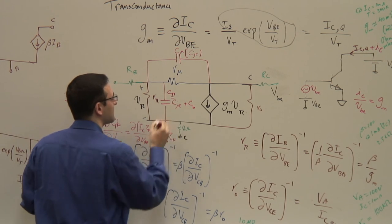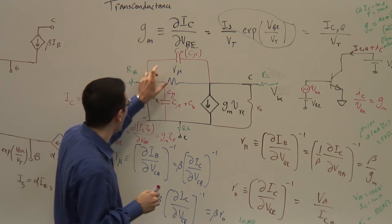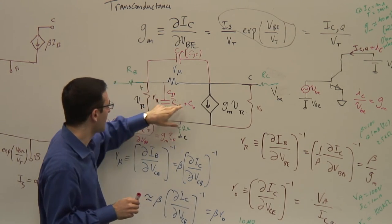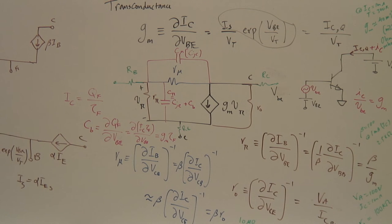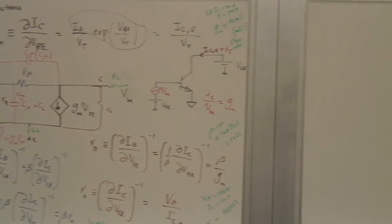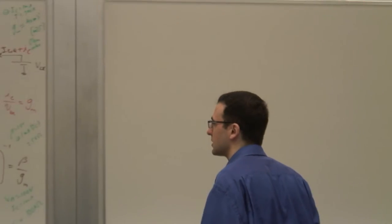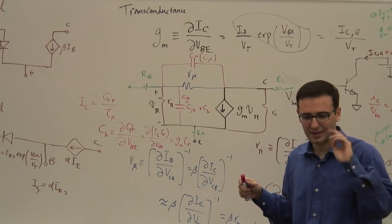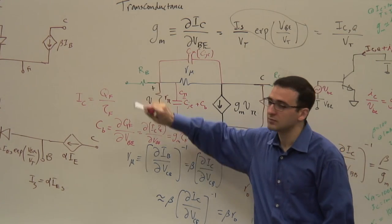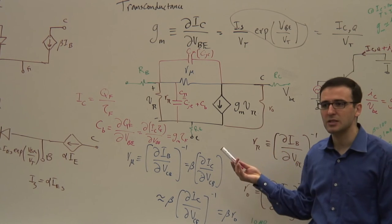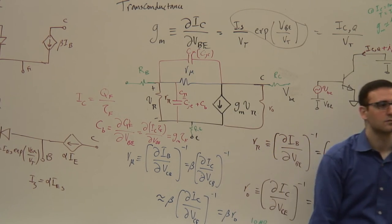So you have Cpi, Cmu, and all the other terms. To summarize: the black component (gm Vpi) is the real transistor action. The first-order low-frequency effects are Rpi and Ro. Rmu is the second-order effect we rarely take into account. The physical resistors Rb, Rc, Re are the green components, and then we have the dynamic capacitors Cpi and Cmu.